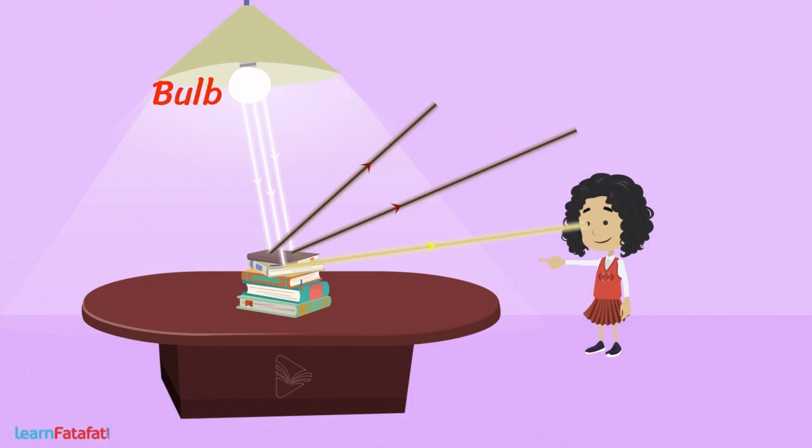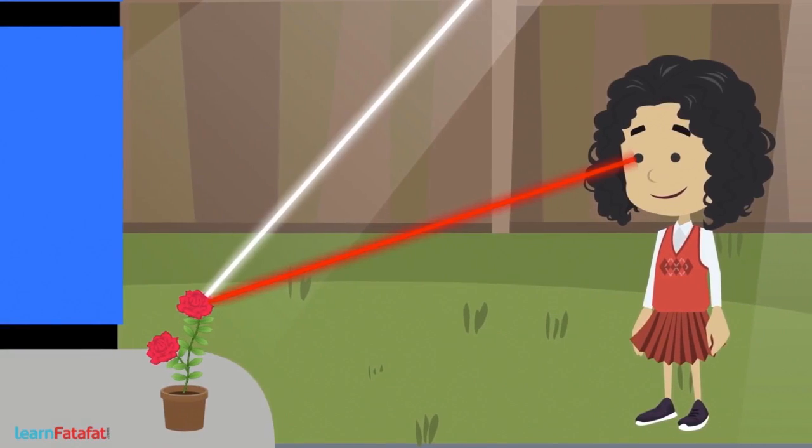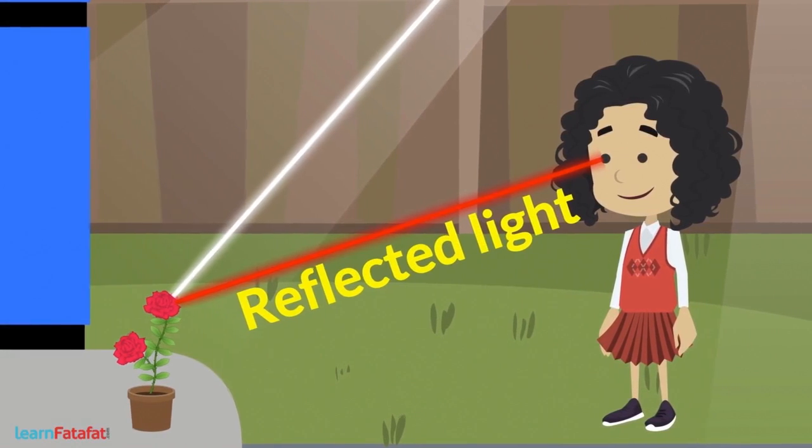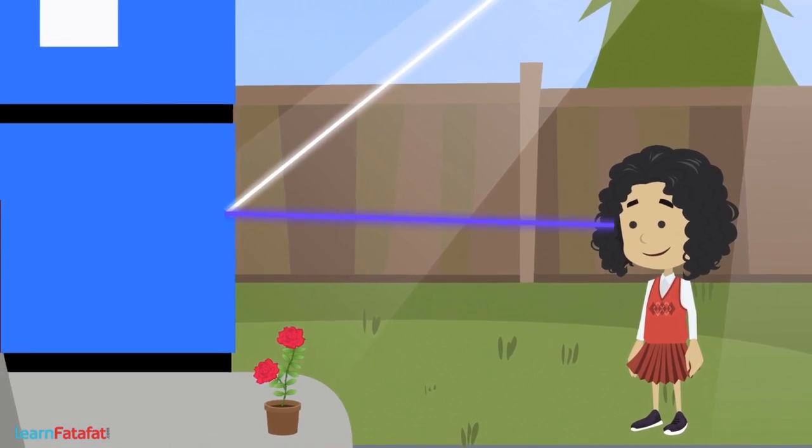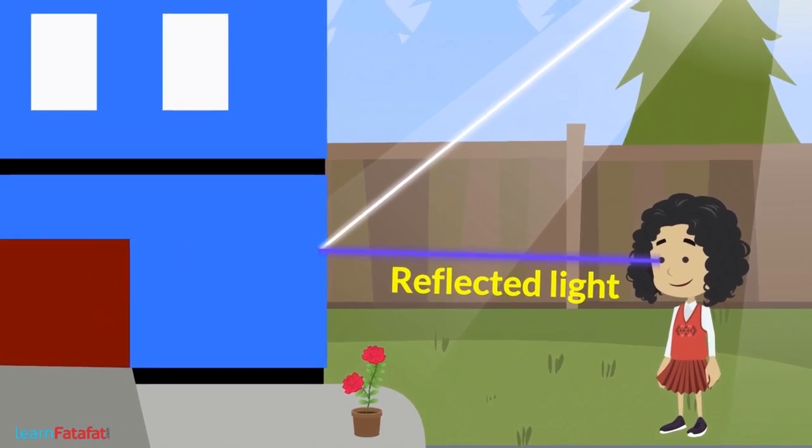Some part of reflected light enters our eyes and we can see that object. The color of the object that we see is actually the light reflected by the object. Rose appears red as it reflects red light towards us. Similarly, the wall appears blue as it reflects blue color towards us.